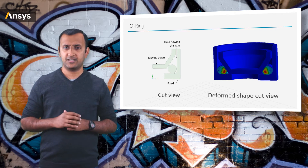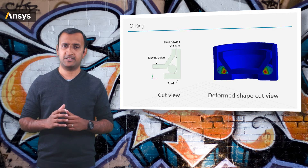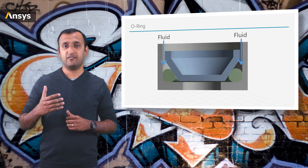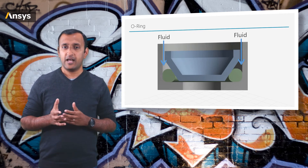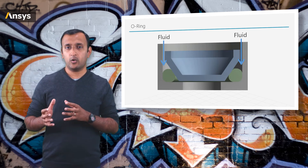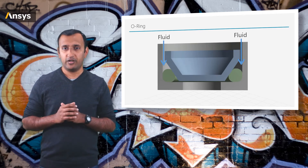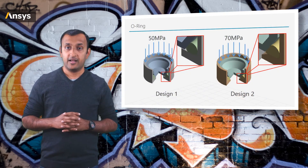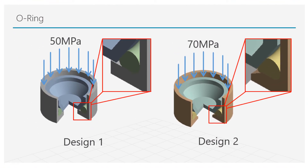We will explore two different designs of the mating assembly and see how the O-ring performs in both. In both designs, we have the O-ring installed between two steel components. After installation, we apply a fluid pressure on the O-ring to see if it can withstand the applied pressure, using a frictional contact between the O-ring and the steel components. In Design 1, the lower component has a flatter base and a fluid pressure of 50 MPa is applied on the O-ring. In Design 2, the lower component has an inclined base and a fluid pressure of 70 MPa is applied.